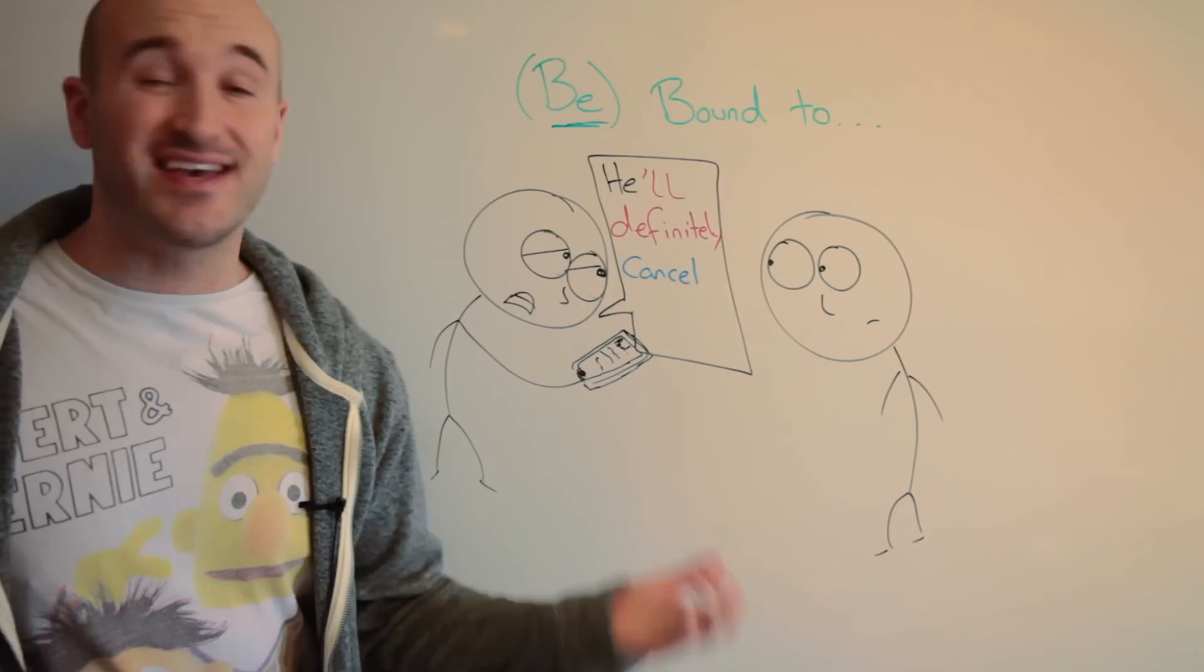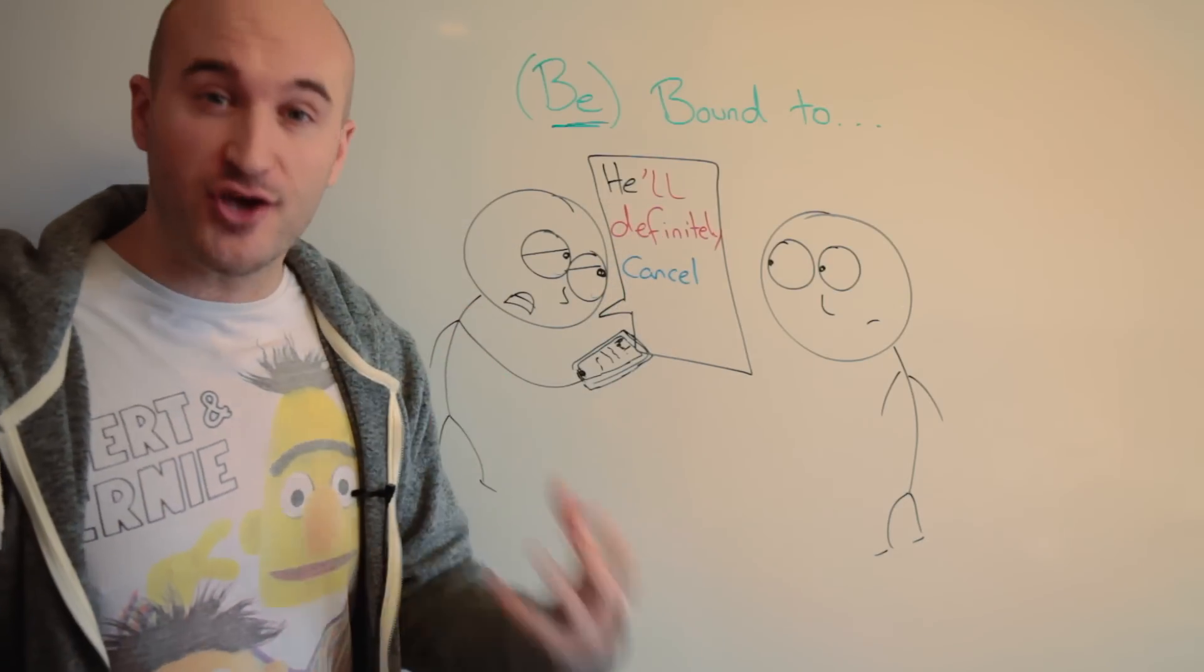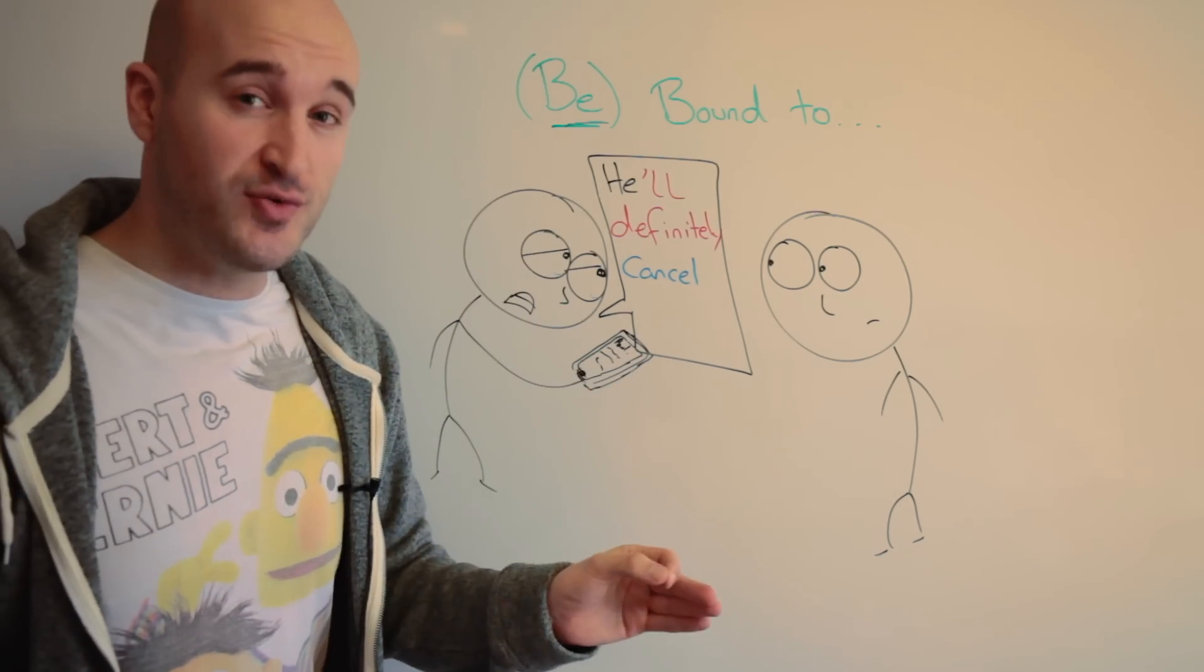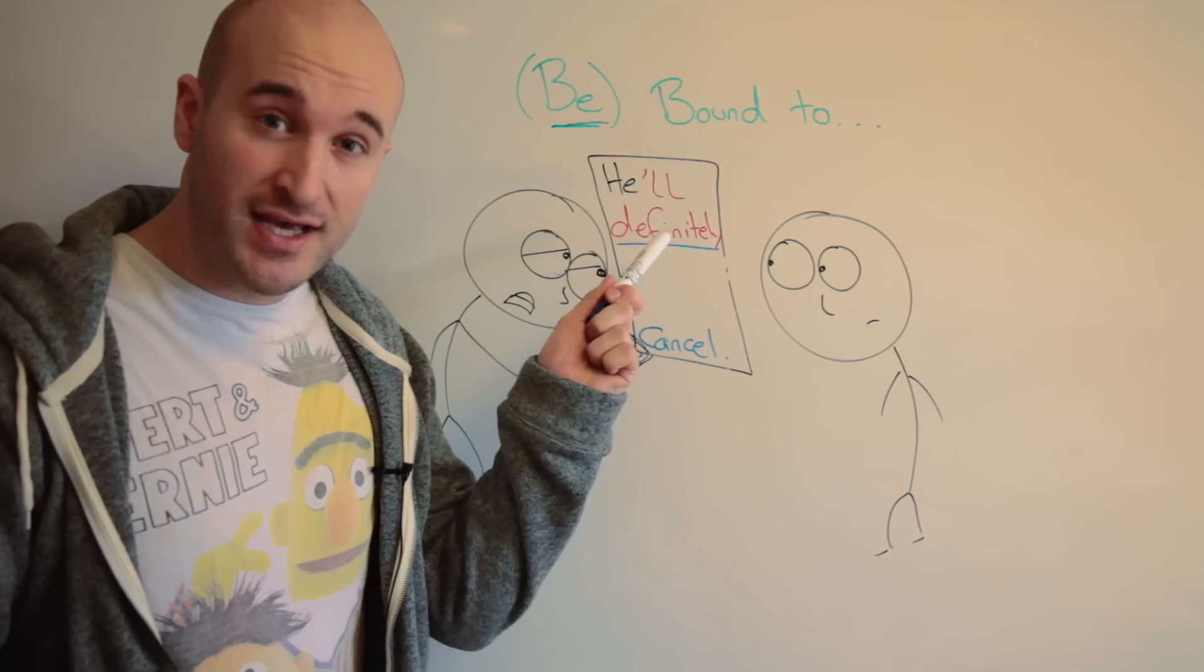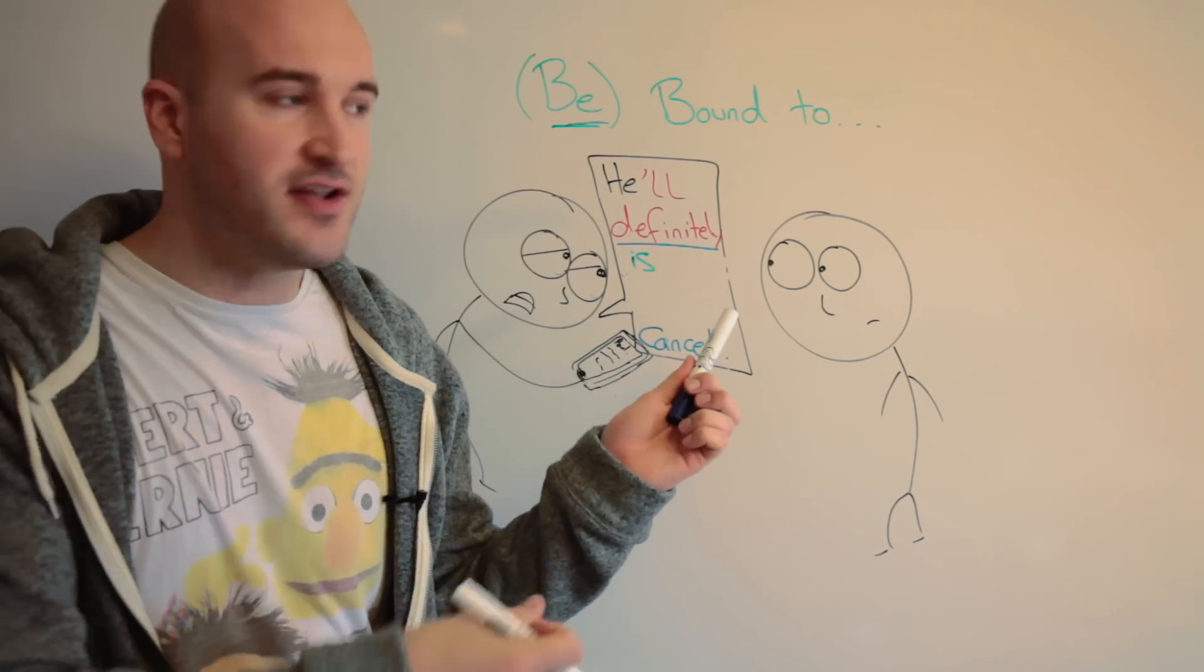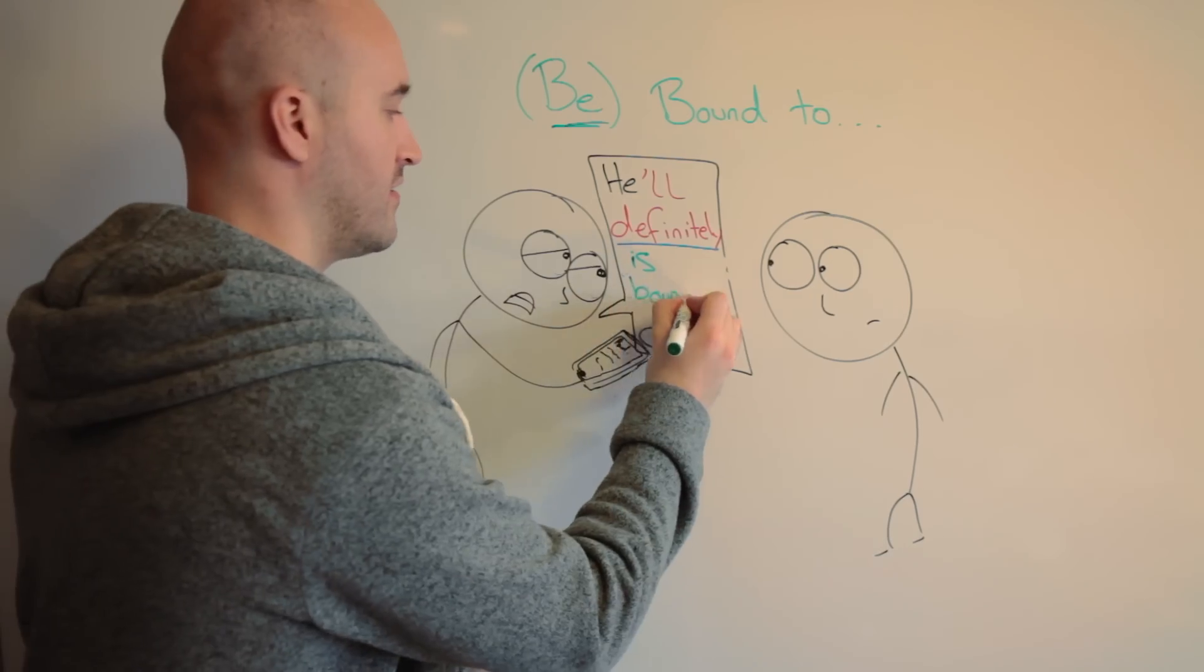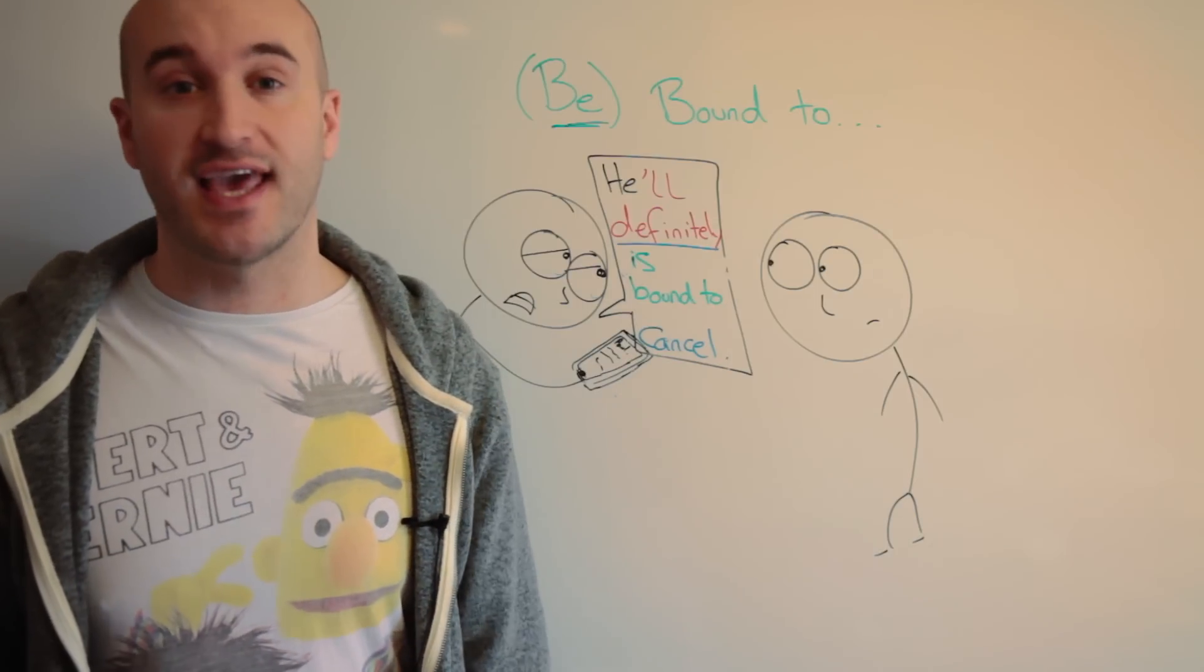yeah, but he'll definitely cancel. Again, will definitely, is definitely going to. We're talking in the future. Replace it with be bound to. What do you think it is? So remember, it's a he. He, she, it. Third person with be. So he is. He is. We want to say definitely will happen. He is bound to. And the verb stays in the infinitive. He's bound to cancel.